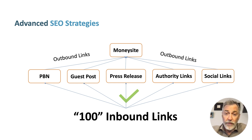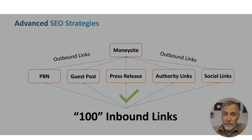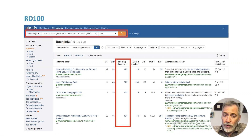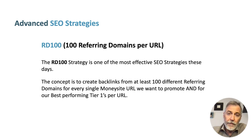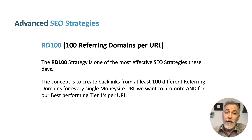Again, the answer is simple — we need to power up each one of our good tier one links. How do we do that? By adding at least 100 inbound links to each one of our best performing tier ones. Our tests over the years have shown that URLs with a high number of referring domains perform way better in the rankings of a website. So the concept behind the RD100 is to create backlinks from at least 100 different referring domains for every single money site URL you want to promote, and your at least 100 best performing tier ones.